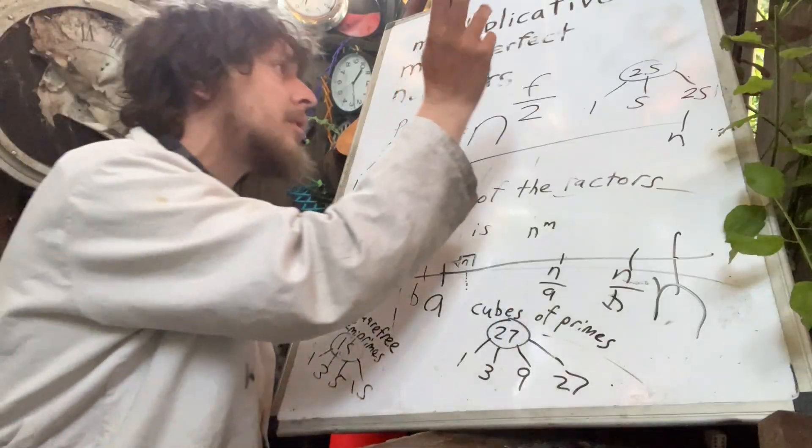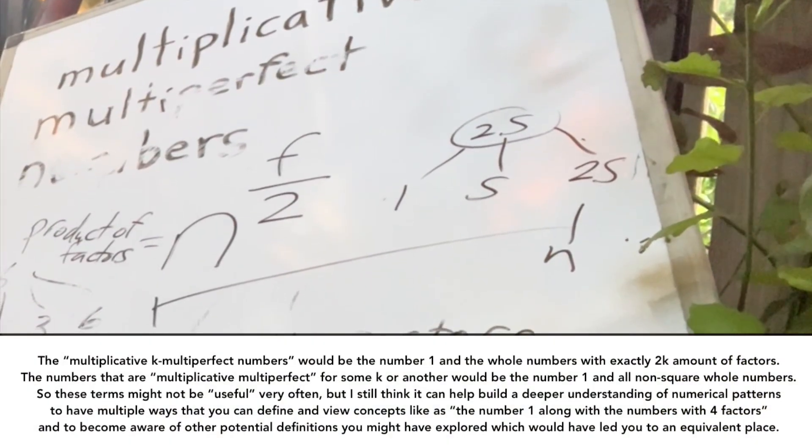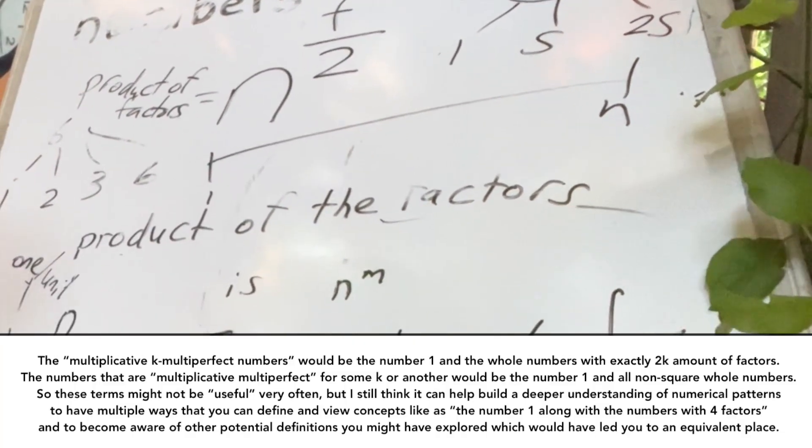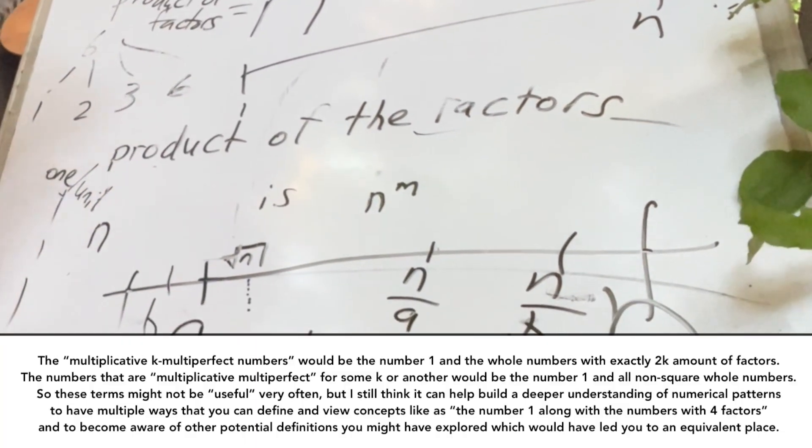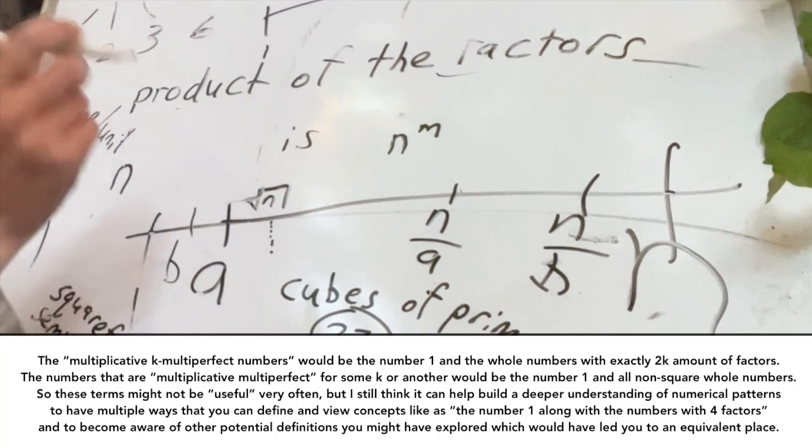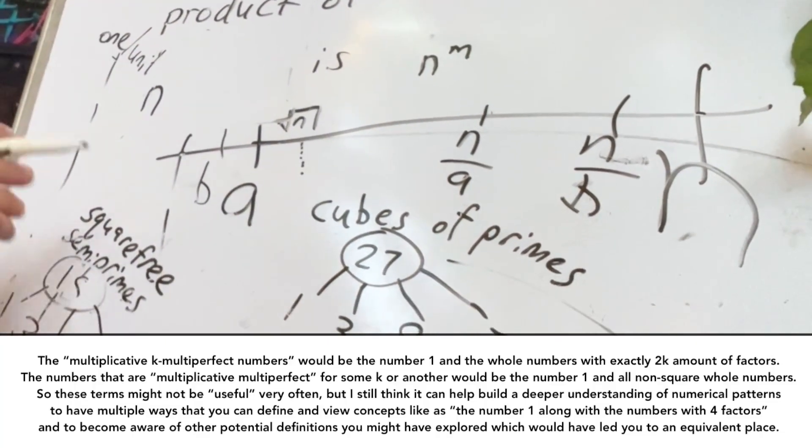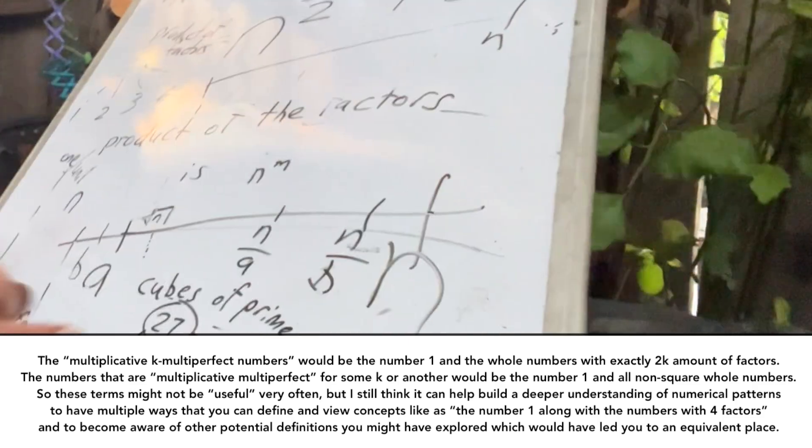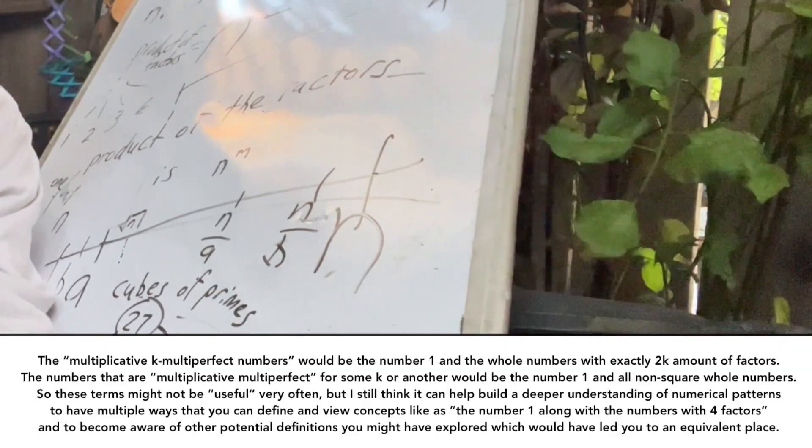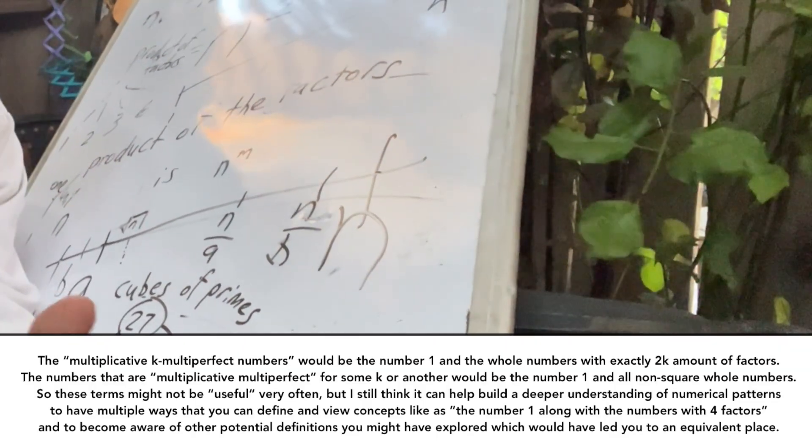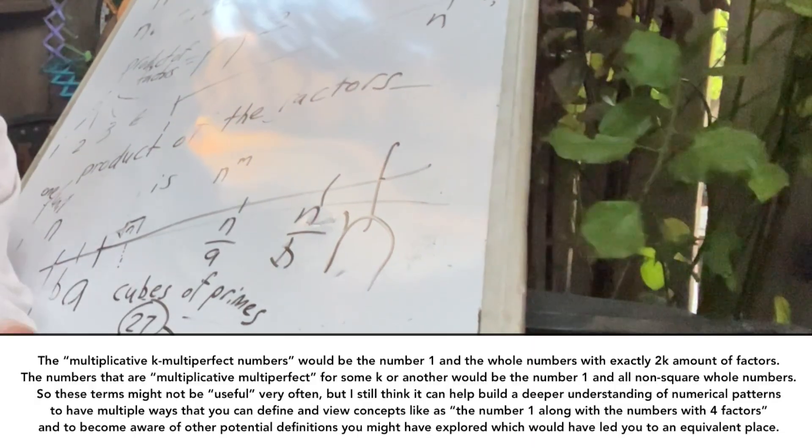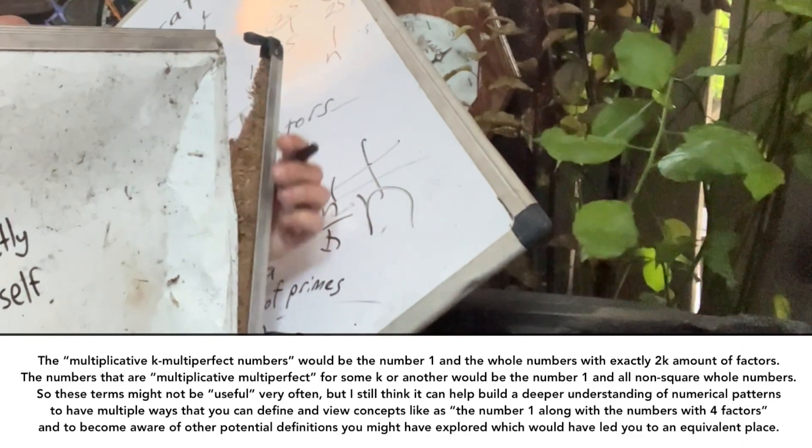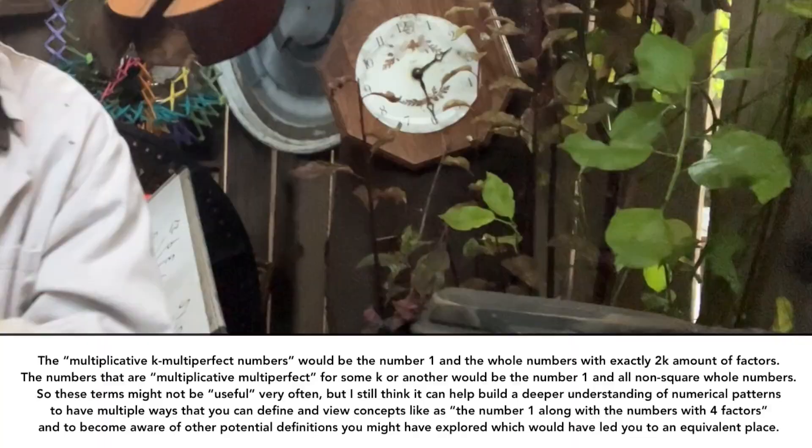So like the multiplicative perfect numbers, my idea for generalizing those into the multiplicative multi-perfect numbers doesn't end up leading to a term that you would use very often, because it describes sets of numbers that we do have other pretty good ways of describing already. But I do think it's interesting and informative to look at connections like this, where you can come up with one definition for something based on some combination of other stuff that you just think might combine nicely. And it turns out that it does describe an equivalent set of numbers to some other definition you already know.